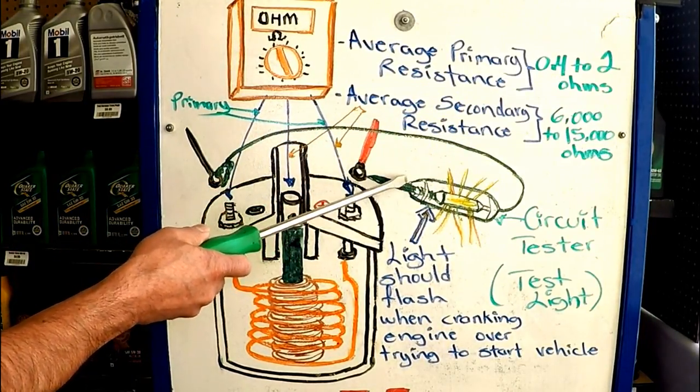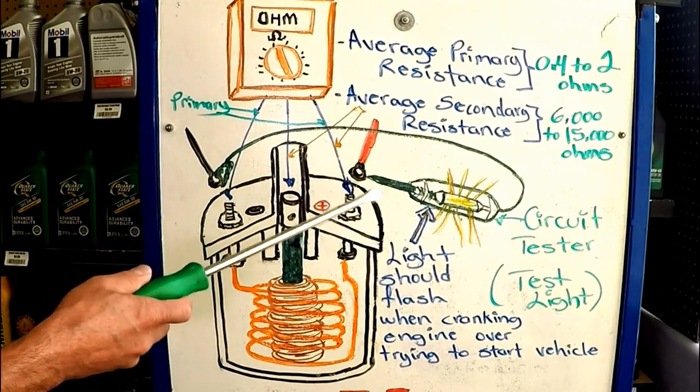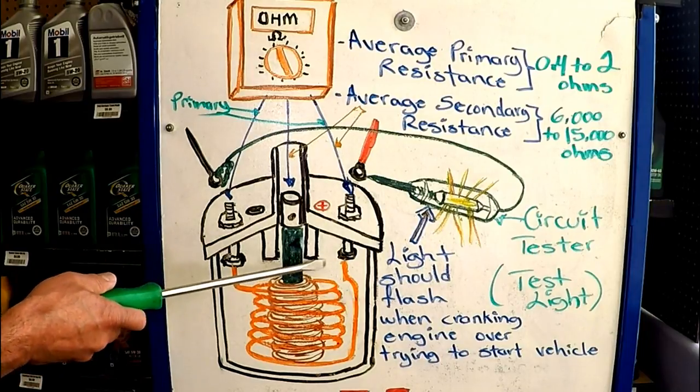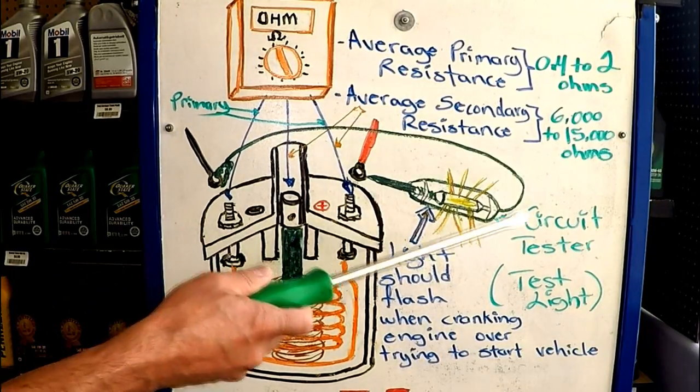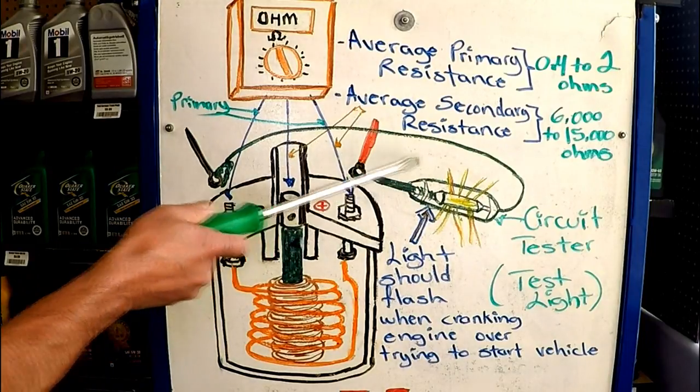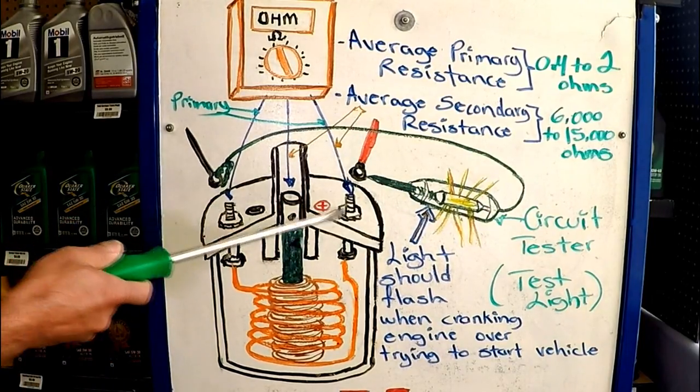And like I said, this is a super simple test, but it can avoid so many headaches. Because a lot of the times it's easy to start going in the coil direction: wires, cap, rotor, all kinds of stuff, when the problem was you were not getting the signal to the coil to begin with.